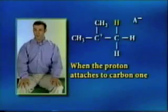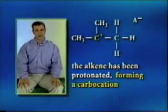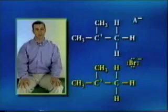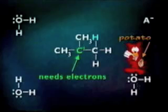When the proton attaches to carbon 1, we say the alkene has been protonated, forming a carbocation — just like we saw happen in the reaction with hydrogen bromide. Since carbon 1 was protonated, carbon 2 is now a carbocation. The carbocation now needs electrons, and there's lots of water around to provide them. Water moves in; its oxygen acts as a nucleophile and bonds to carbon 2. The oxygen now has a positive charge, so one of the hydrogens from the water molecule leaves, taking its electrons and leaving a neutral product behind.